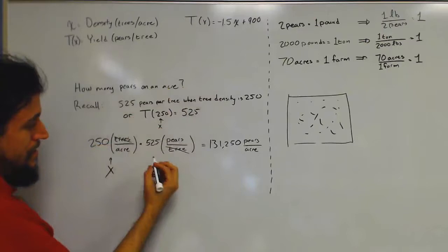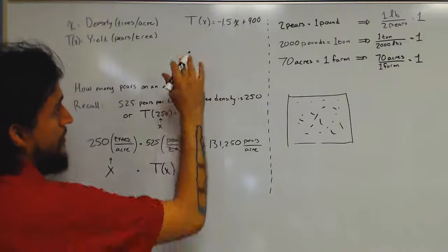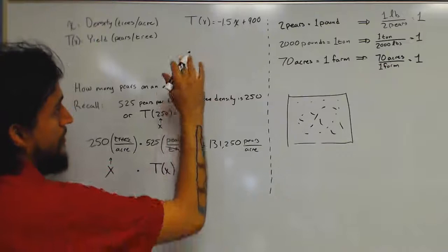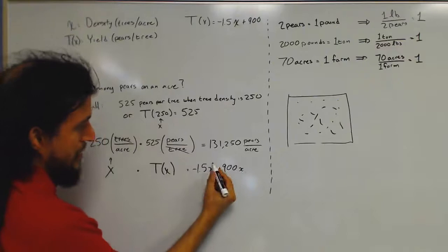And all we did was we multiplied them together. So if we were to multiply x times this guy right here, we simply end up with, and I'm just going to write the simplified form here, work it out for yourself if you want to see if it works out, we get something that looks like this. And this is a quadratic equation.